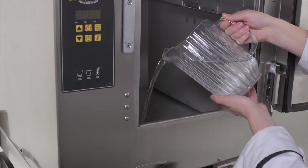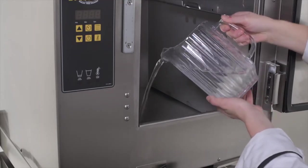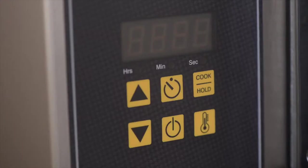Open the door and fill the steamer with two and a half gallons of water, or until the water level is at the water fill line. Once filled with water, close the door and press the power on key.